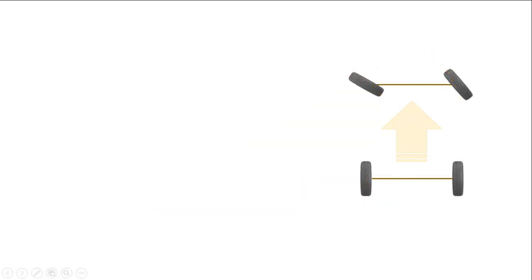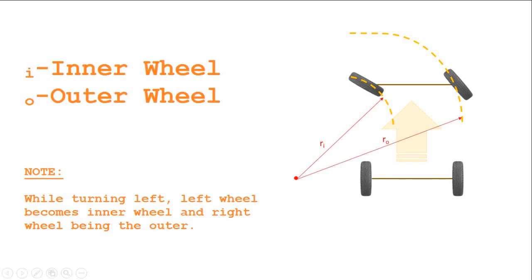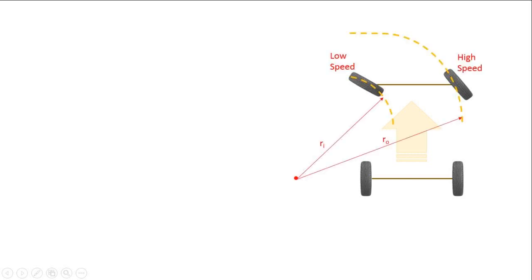When you take a left turn, the left wheel covers a shorter distance and the right wheel covers a longer distance. It means that both the tires are rolling in a different radius and different speeds.